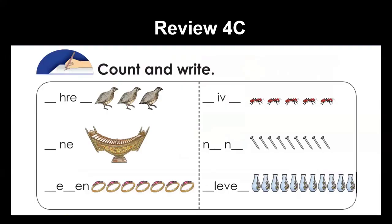Now let's count and write. How many quails — how many birds are there? Very good, there are three birds. How many xylophones are there? One xylophone. How many rings are there? One, two, three, four, five, six, seven — seven rings. S-E-V-E-N, 7.